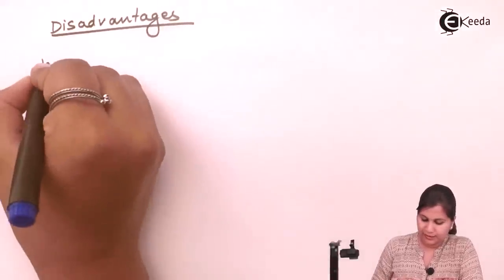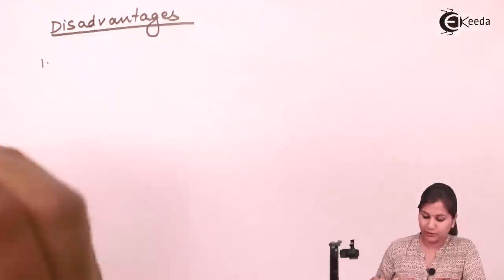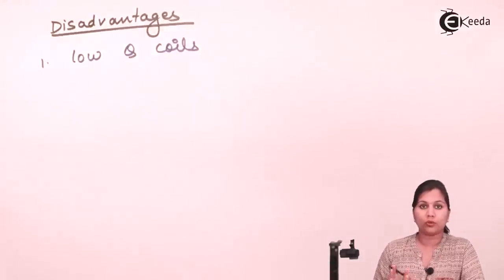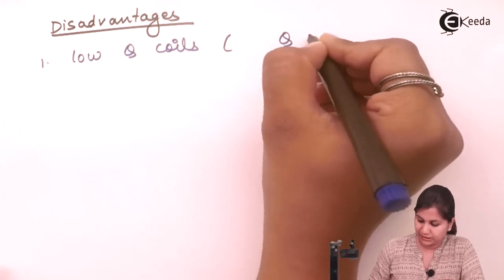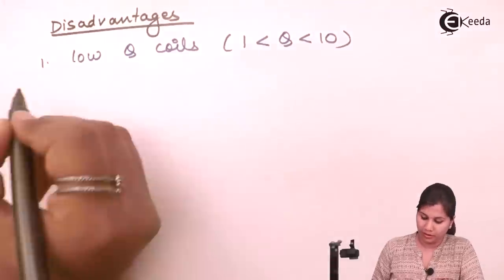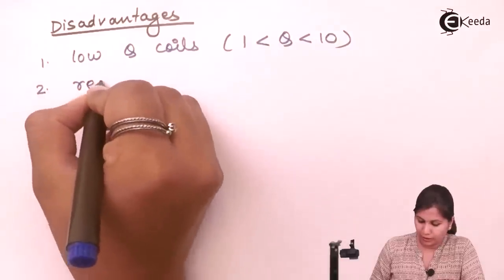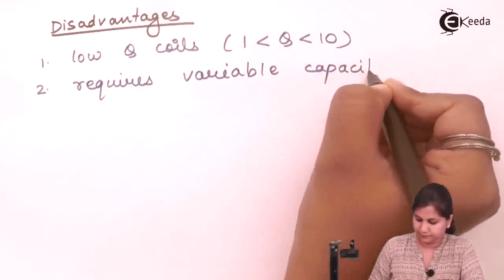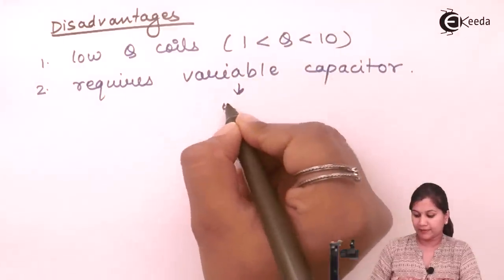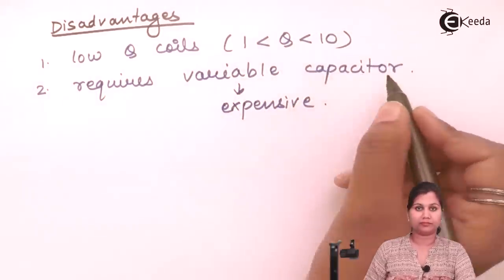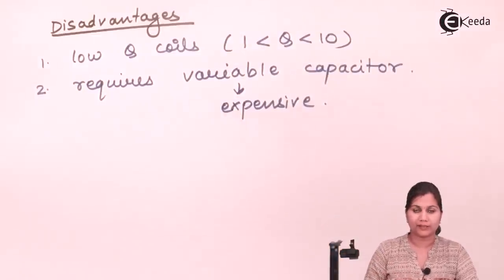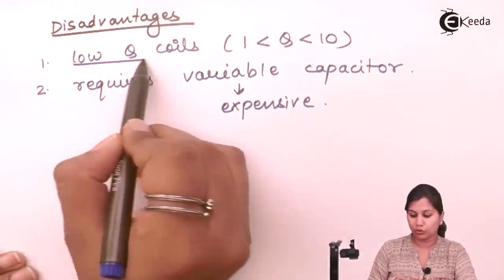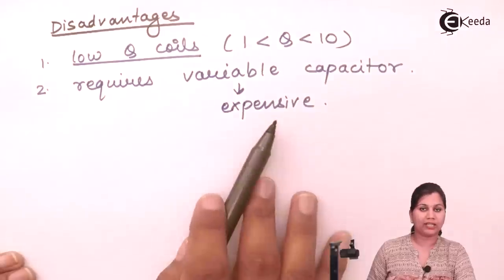The disadvantages of this bridge are: first, it is limited to measurement of inductance for low-Q coils only — specifically coils with a quality factor between 1 and 10. Second, this bridge requires a variable capacitor, which is very expensive, and calibrating this capacitor requires a very high degree of accuracy.